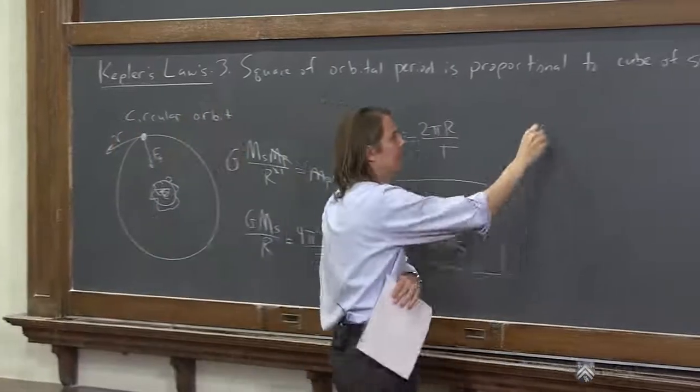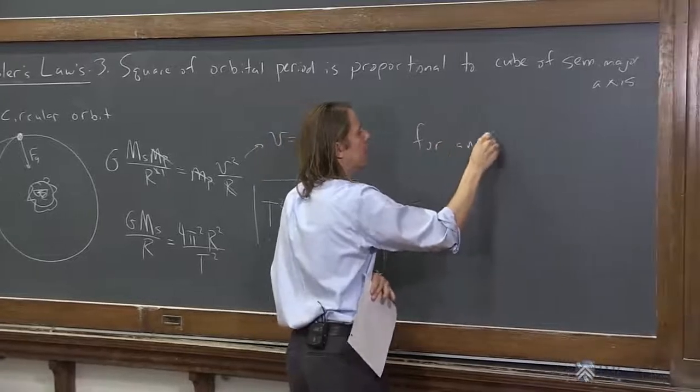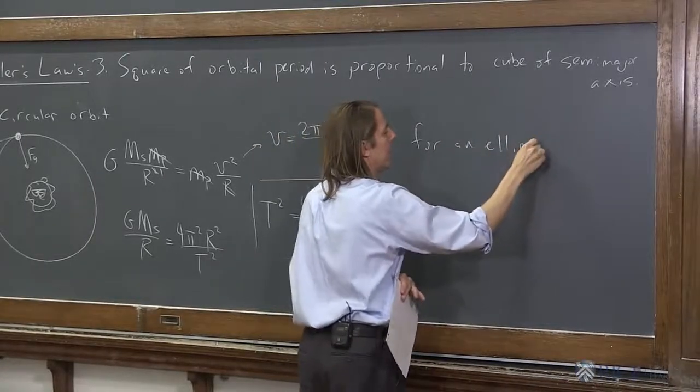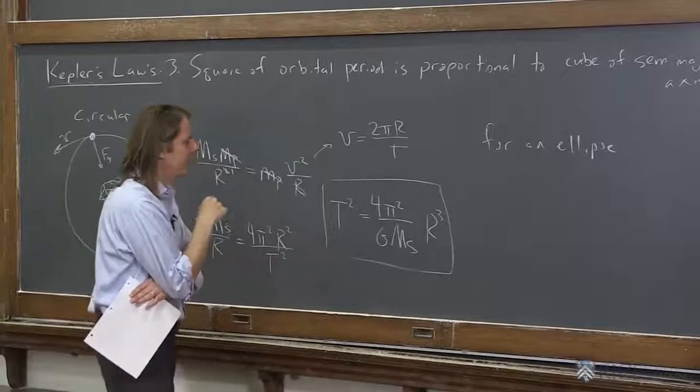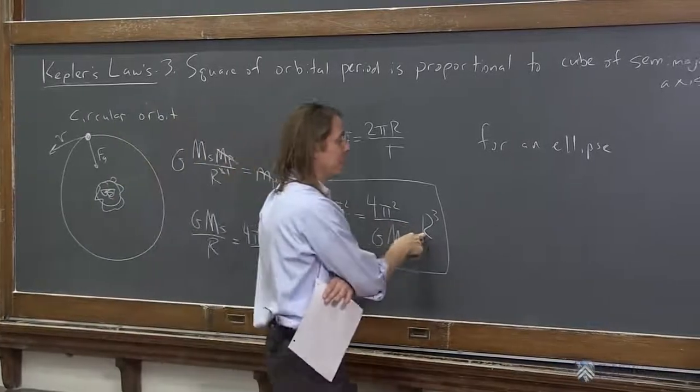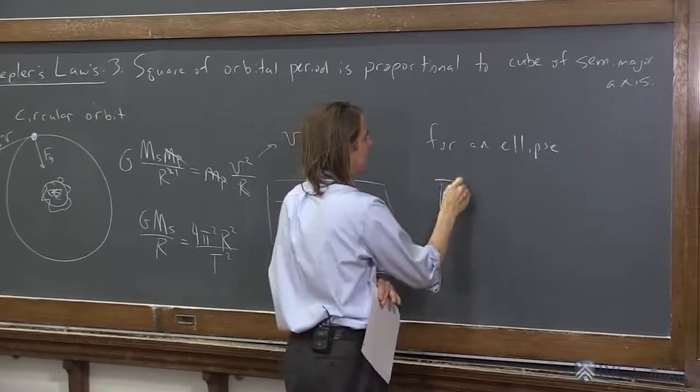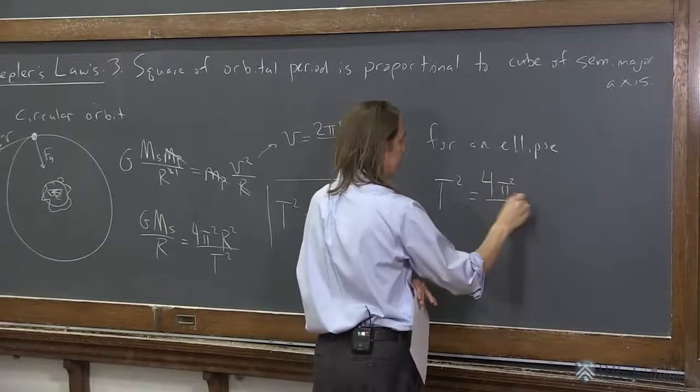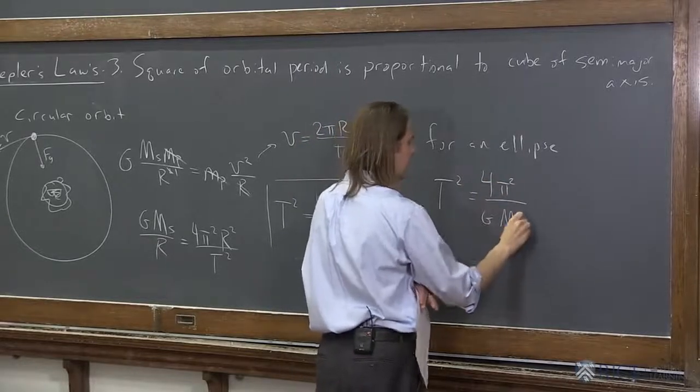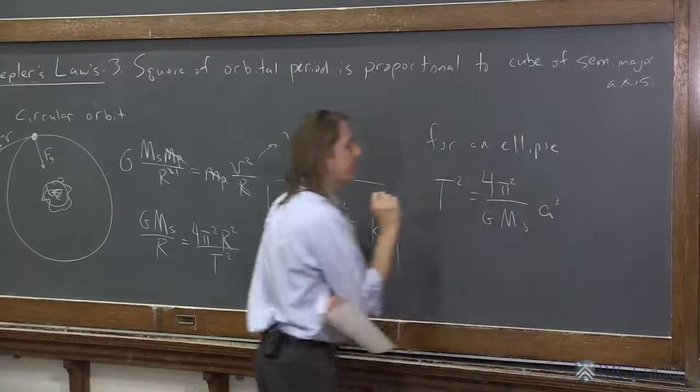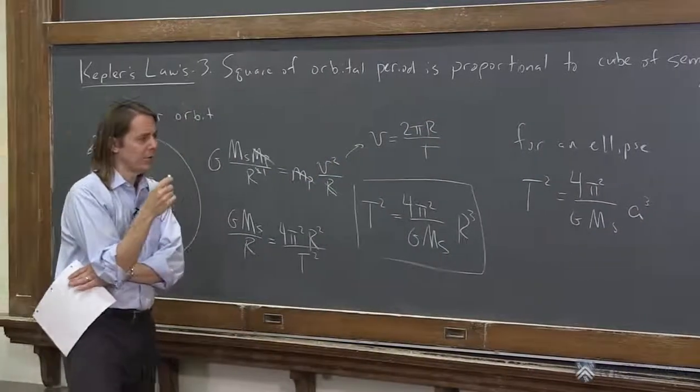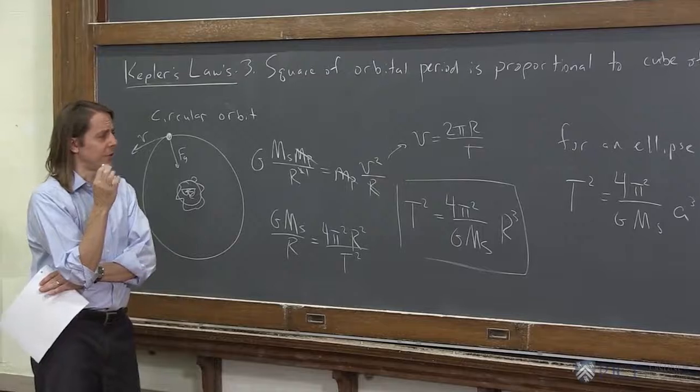For an ellipse, it turns out, and again, we're not deriving elliptical orbits, but it turns out you can just replace R with A. T² is 4π²/G, mass of the sun, A³, where A is the semi-major radius, or the semi-major axis of the ellipse.